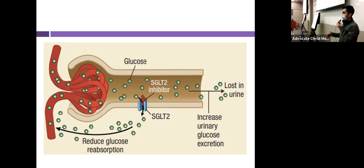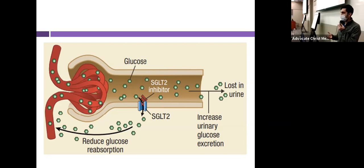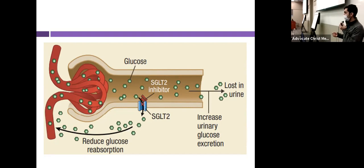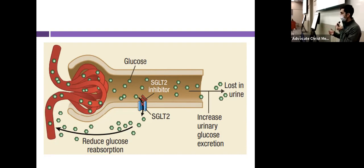A condition called familial renal glucosuria is actually a natural model for SGLT2 inhibitors, wherein there's a genetic defect in the SGLT2 transporter. The SGLT2 transporter is in the proximal tubule of the kidney — it's a sodium-glucose co-transporter. By inhibiting this transporter, you effectively block reabsorption of sodium and glucose, so you will be losing glucose in your urine, and on top of that, you're also going to be losing sodium.